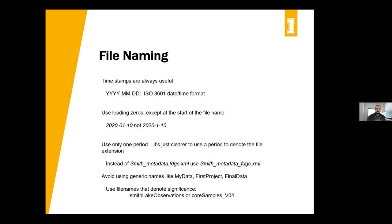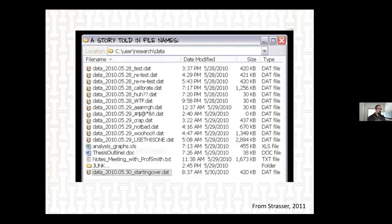Lastly, try not to use generic names like 'my data,' 'first project,' or 'final data.' I've got a lot of projects called 'final data' — probably too many. One alternative is to version your data as you go through each major step — for example, 'core samples version four' — so the last version will always be the final data. This makes sure that your files are unique, your projects are unique, and it's very clear to people what they are and where they fit in your projects. If you're not careful, you can end up with a problem of multiple files with the same generic name, which is not fun for anybody — something to avoid if you can.